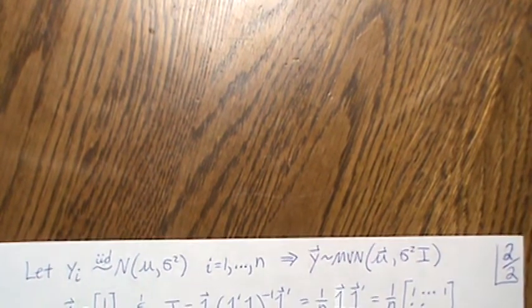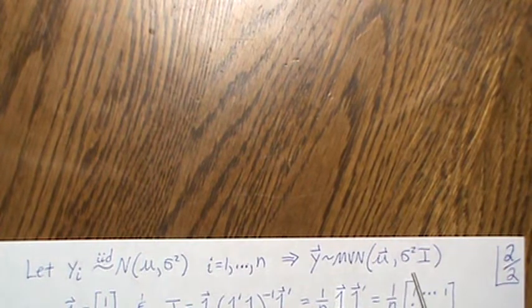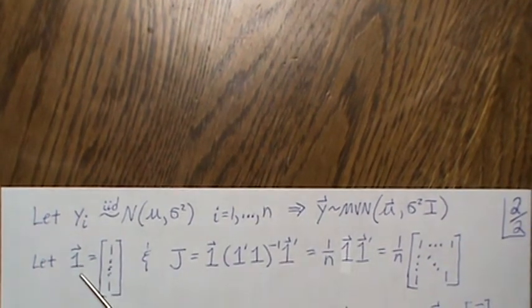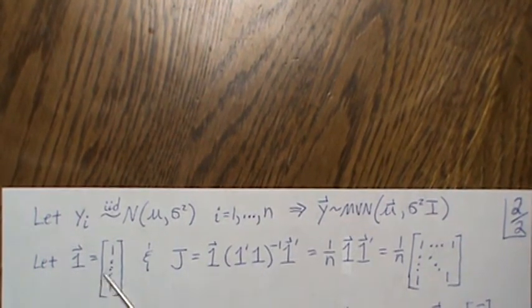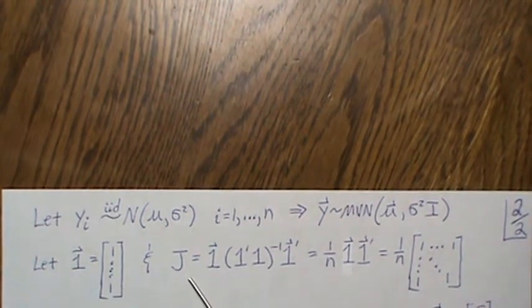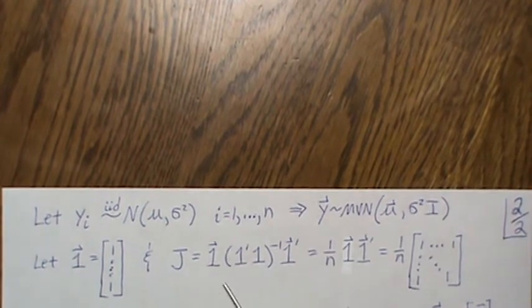So let's let Yi be IID normal random variables, mean μ and σ squared, from i equals 1 to n. Now, if we put it in matrix form, this is a vector of Ys, it's multivariate normal with mean μ and Σ equals σ squared I.